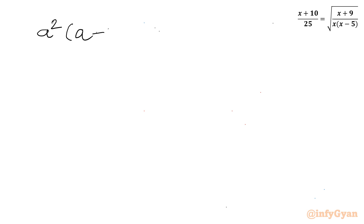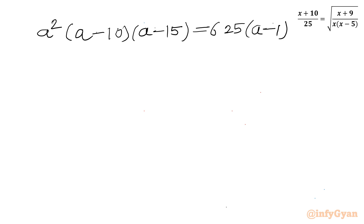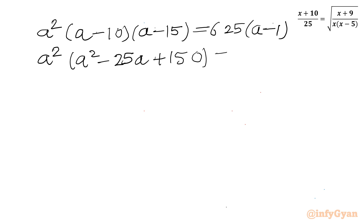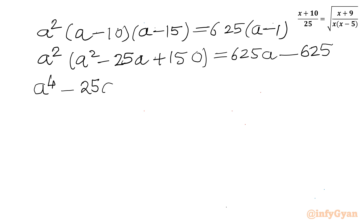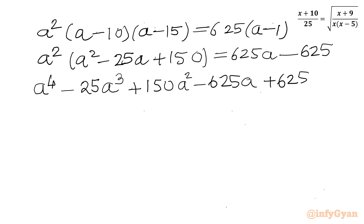I can write: a² times (a minus 10) times (a minus 15) equals 625 times (a minus 1). Multiplying out: a² times (a² minus 25a + 150) equals 625a minus 625. This gives us a⁴ minus 25a³ plus 150a² minus 625a plus 625 equals 0.